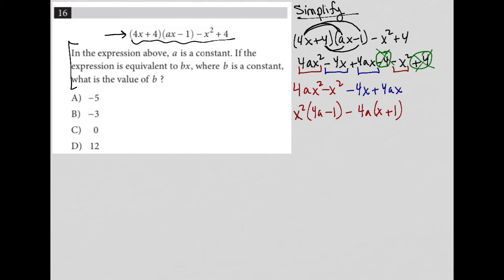So the question says, in the expression above, a is a constant. So that's good to know - this is actually a number here, not a variable. If the expression is equivalent to bx, that's new information. If the expression is equivalent to bx, that means this 4ax squared minus x squared minus 4x plus 4ax is actually equal to just bx. That says a lot. It says where b is a constant. What is the value of b?